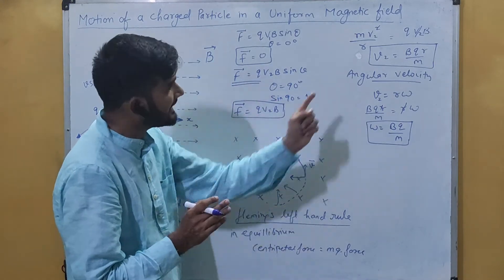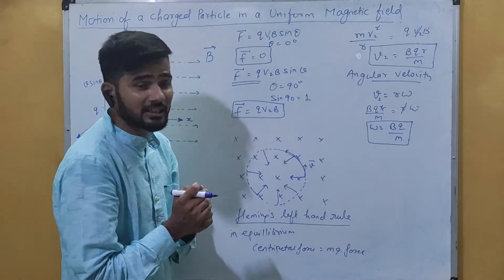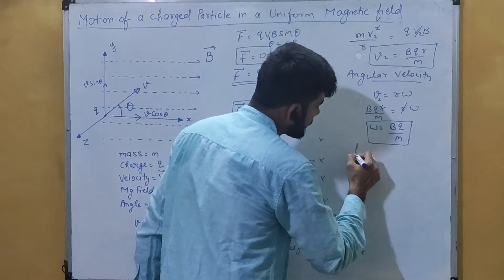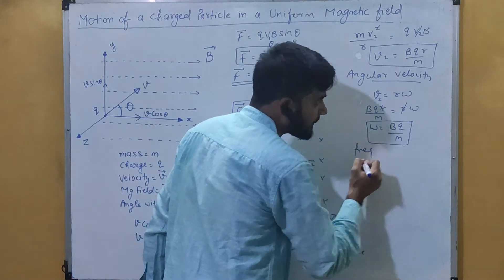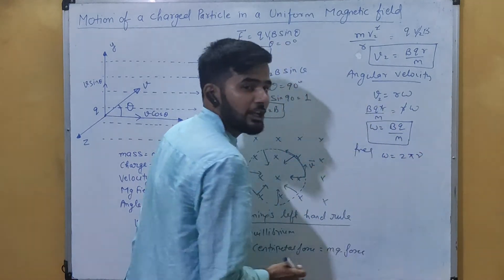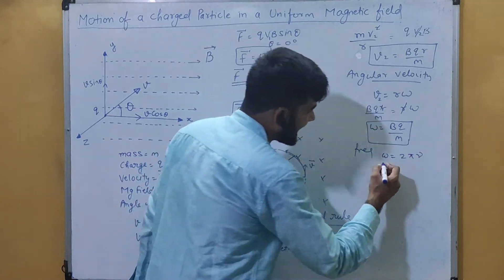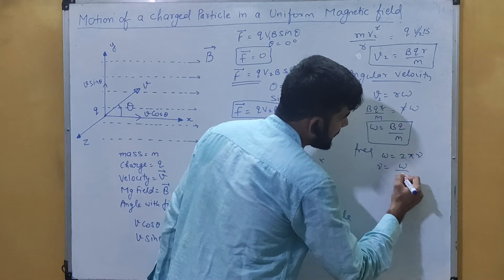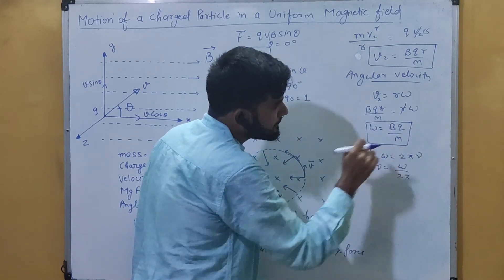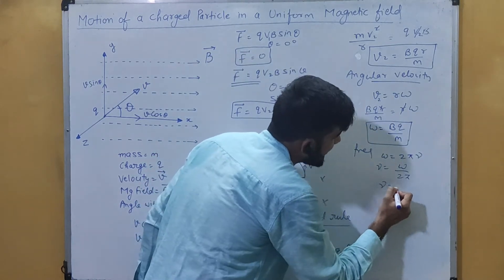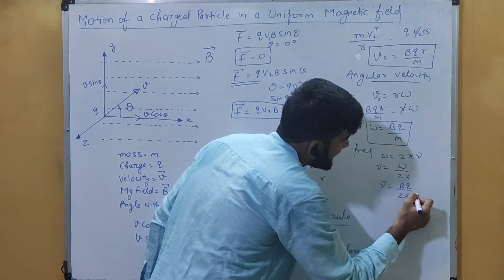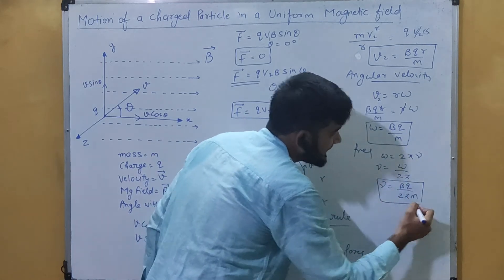Now that we have angular velocity, we can calculate the frequency. Using omega = 2·pi·nu, we get nu = omega / (2·pi). Substituting omega = Bq/m, the frequency is nu = Bq / (2·pi·m). This is the expression for the frequency of the particle moving in the magnetic field.